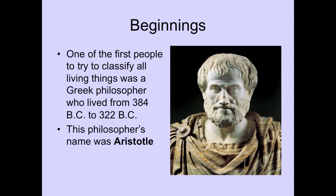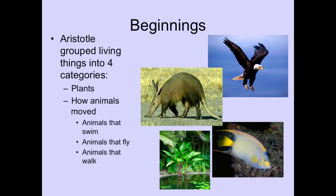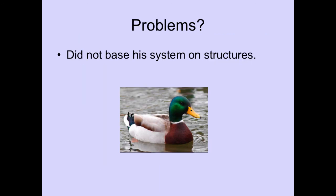In the beginning, people used to always try to classify things. One of the first people to classify was a Greek philosopher named Aristotle. However, Aristotle only grouped things into four categories. He believed that all life was either a plant or an animal — nothing in between. And if you were an animal, you were grouped by how you moved: animals that swim, animals that fly, and animals that walk. The problem was that he didn't base his system off an organism's structure; he just based it off what he saw and how they moved.